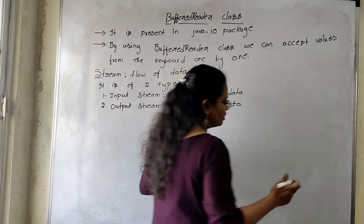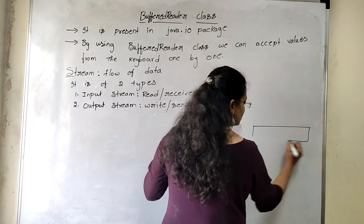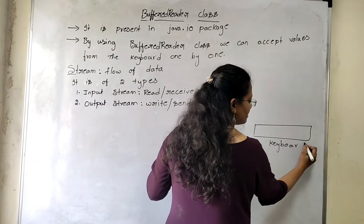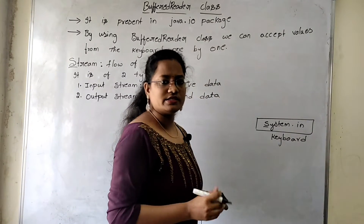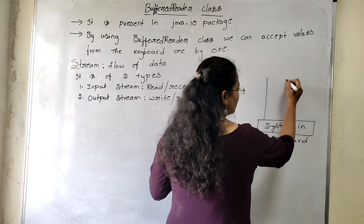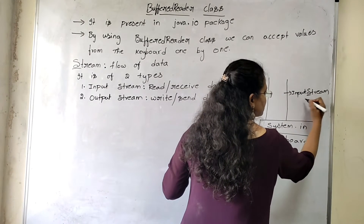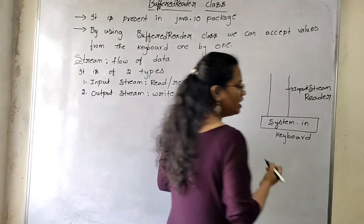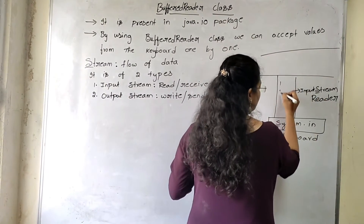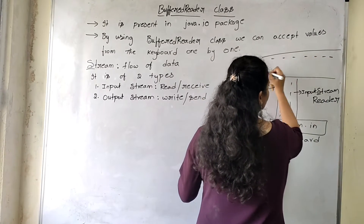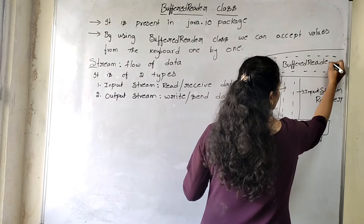When we are using BufferedReader Class, let us see a small diagram of how the data is transferring from the Keyboard to the BufferedReader Class Object. Let us assume this is a Keyboard. You need to accept your data from the Keyboard. System.in — System is a predefined class, and 'in' is nothing but an instance object of the PrintStream. Whatever data you are taking will be passed into InputStreamReader. InputStreamReader means whatever the data you are taking, either it can read or receive the data. Whatever data you are taking from the Keyboard will be sent to the BufferedReader Class Object.